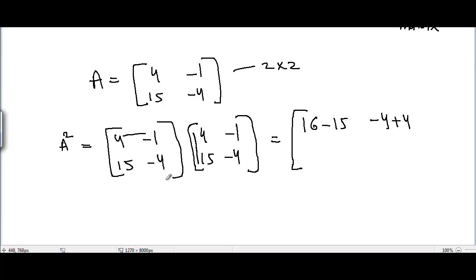15 times 4 is 60. Now we are going to second row, first column. It's 15 times 4 is 60, and -4 times 15 is -60.